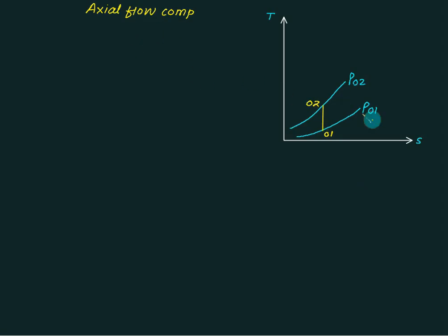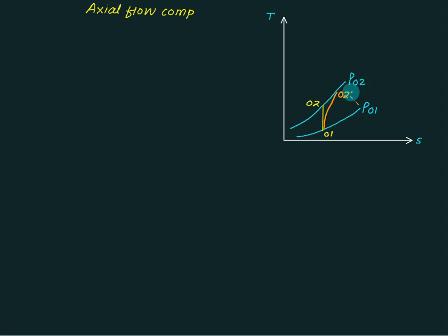In an axial flow compressor, p01 to p02 represent one stage. T01 is the initial stagnation temperature at inlet and T02 is the stagnation temperature at outlet for stage one. We can define the stage efficiency based on compression following an index greater than gamma, where n is more than gamma for the actual process and n equals gamma for the isentropic case.